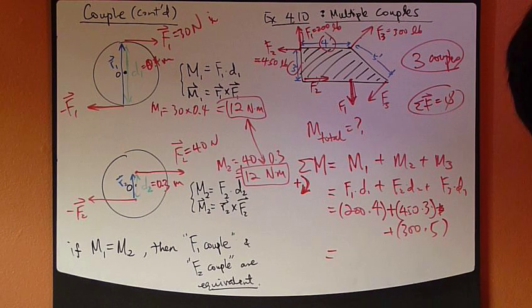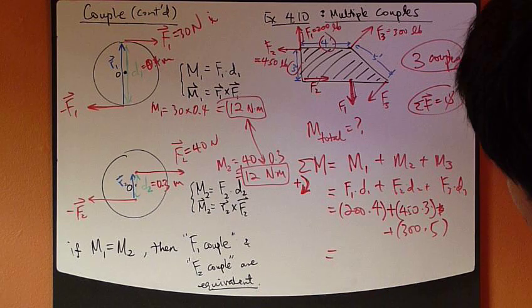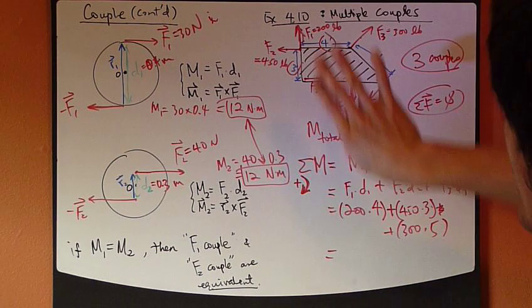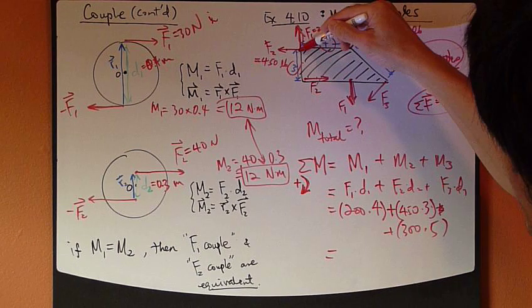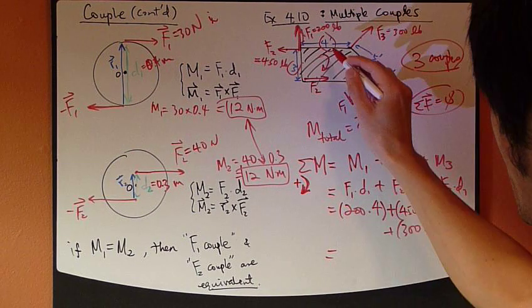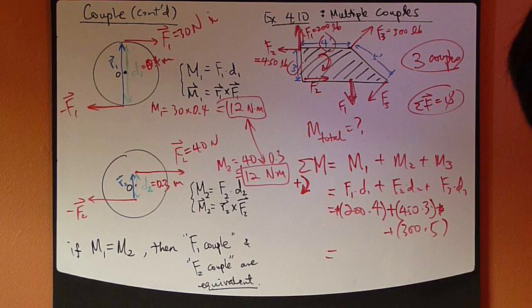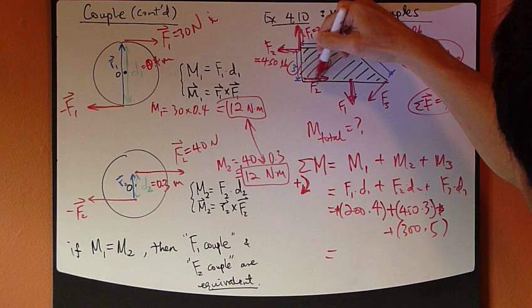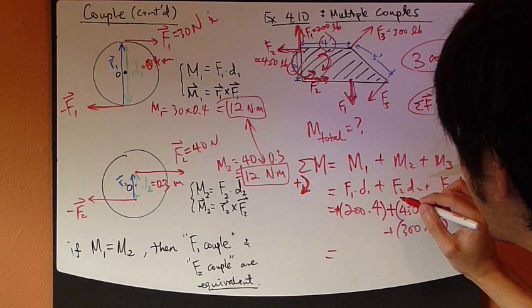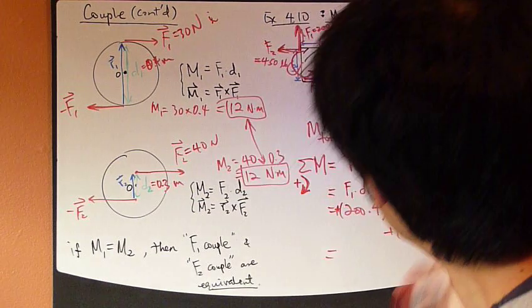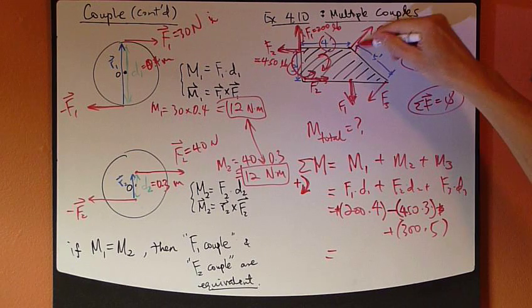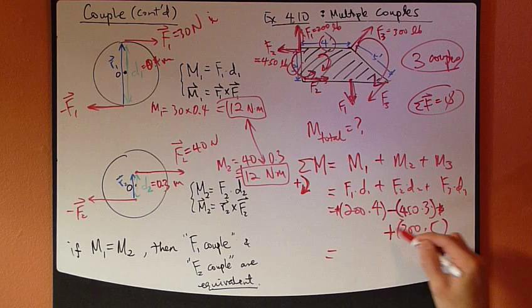Now, as far as the sign is concerned, you need to then look at the sign of each one, whether it's positive or negative. This guy right here, 200 times 4. So, the first couple system tends to create a positive moment. It goes out this way. So, it's a positive moment. Clockwise moment is positive. So, this is positive right here. F2 is these two right here. So, these two together tend to create a counterclockwise, which is negative now. So, you need to add a negative sign in front. F3 is going this way. So, tends to create a clockwise, which is positive. So, positive.